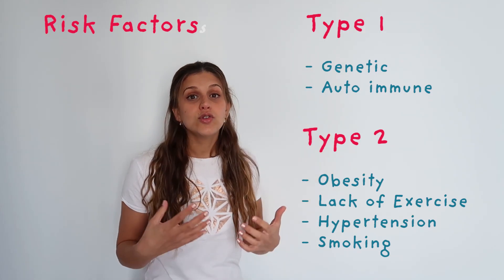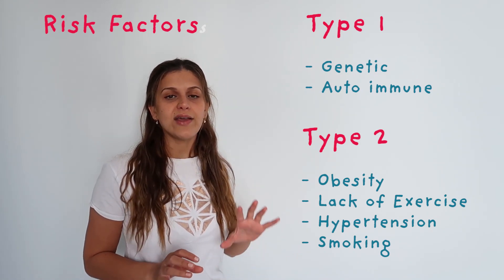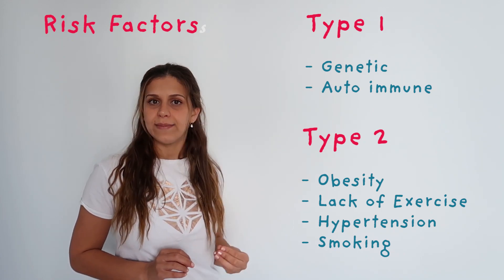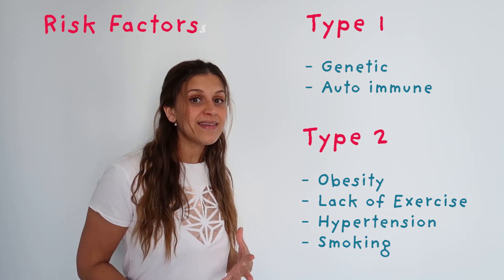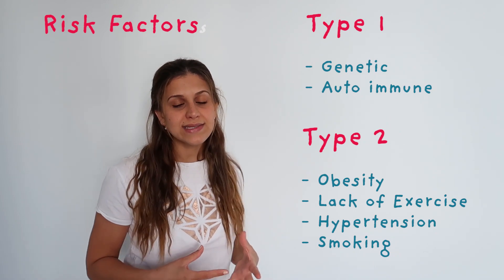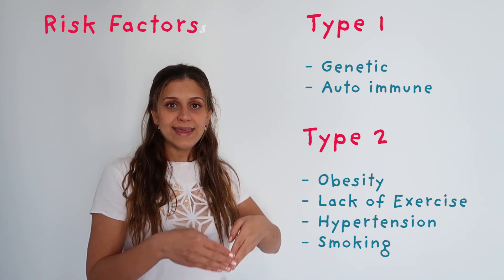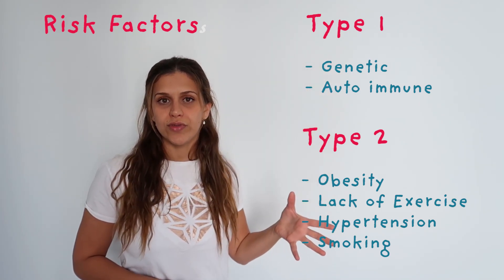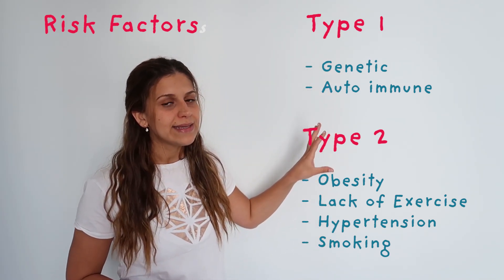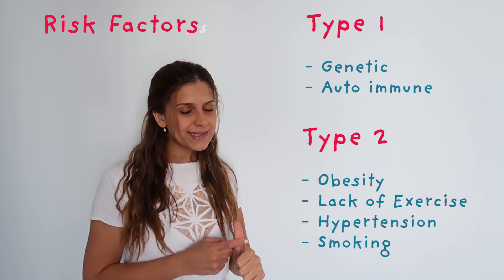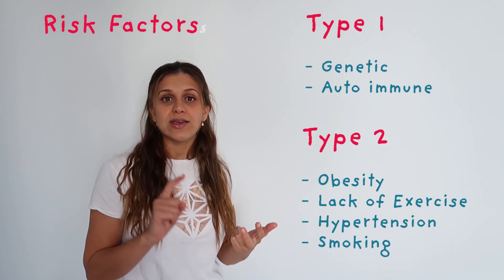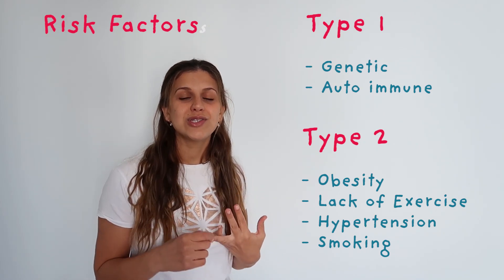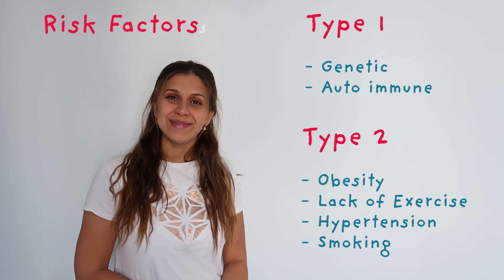The risk factors to develop diabetes differ according to type. Type 1 diabetes is mostly a genetic form — having an immediate family member with type 1 diabetes most likely means the kids will also get it, or it can be an autoimmune disorder. Type 2 diabetes is caused by obesity, lack of exercise, increased hypertension, and there is research suggesting that smoking is also related to type 2 diabetes.